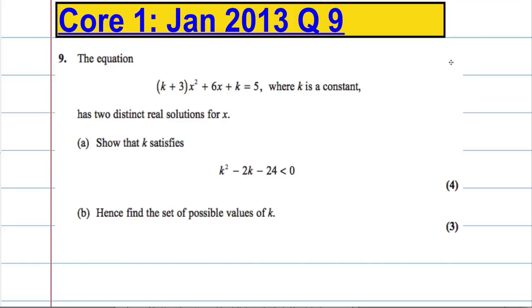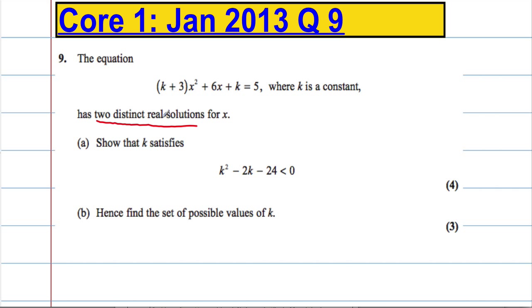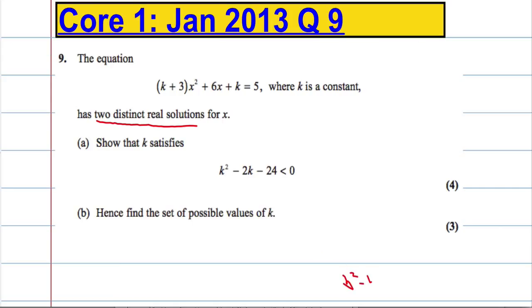Part A, show that k satisfies k² - 2k - 24 < 0. Okay, so the key to this question is this information here, where it says that it has two distinct real solutions for x. That means that the discriminant b² - 4ac must be greater than 0, because it's got two distinct real solutions.